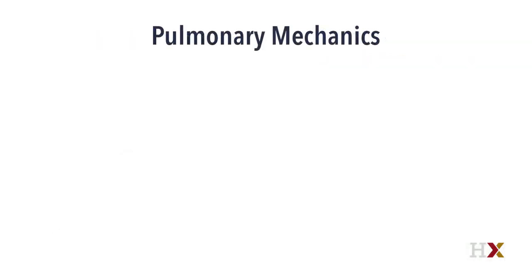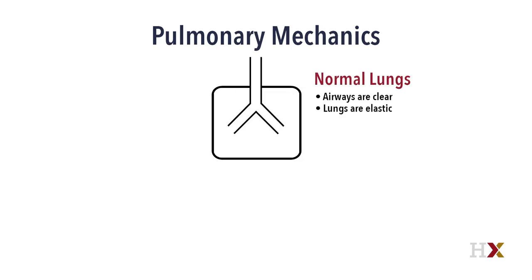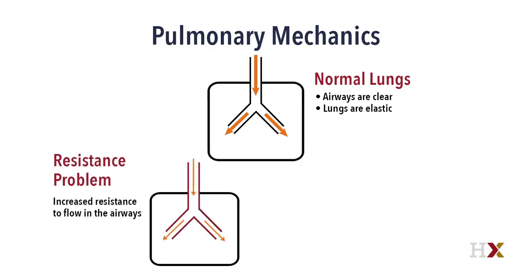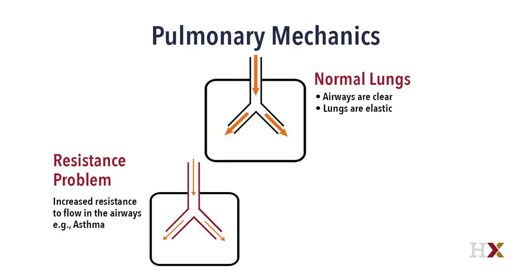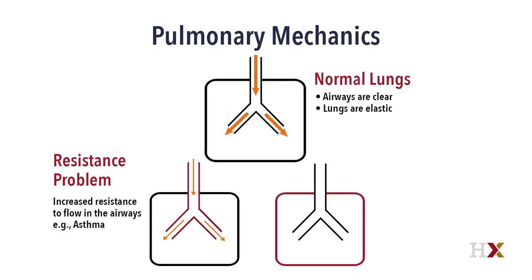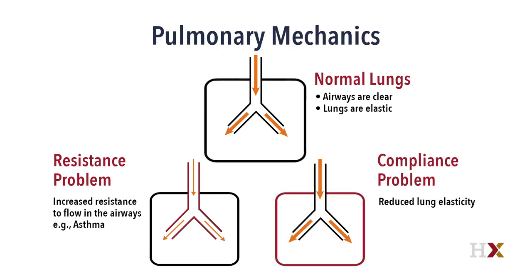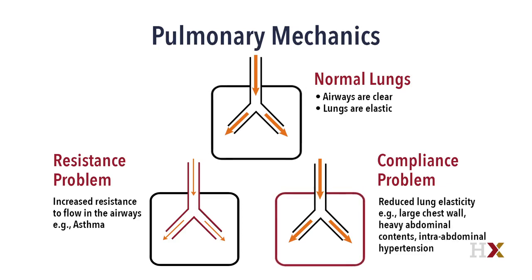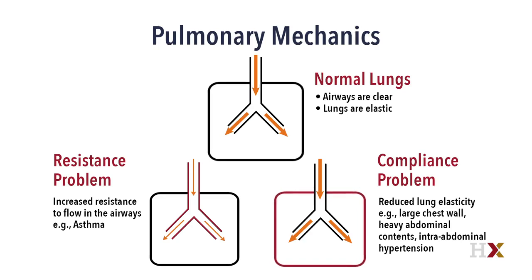Considering pulmonary mechanics is very important. In this example, we have a normal set of lungs and airways at the top. However, some patients can have resistance problems — resistance to flow, requiring airflow. This might represent somebody who has asthma, a great example of a resistance problem. Conversely, there are patients who have compliance problems: their airways are fine, no problem with flow, but the lungs themselves are stiff, edematous, and don't inflate very easily. Compliance problems are also seen in patients who have a large chest wall, heavy abdominal contents, or intra-abdominal hypertension — anything that creates heaviness in the lungs or chest wall.